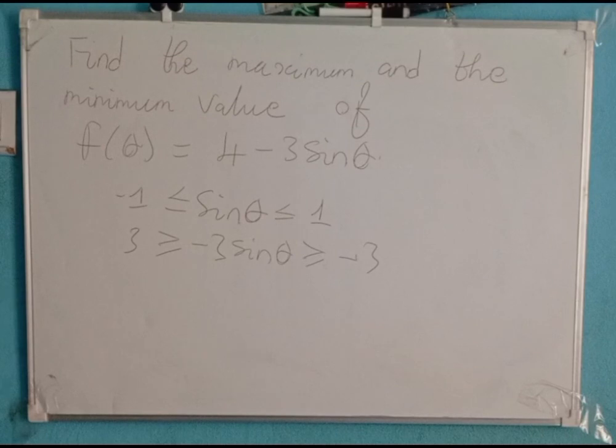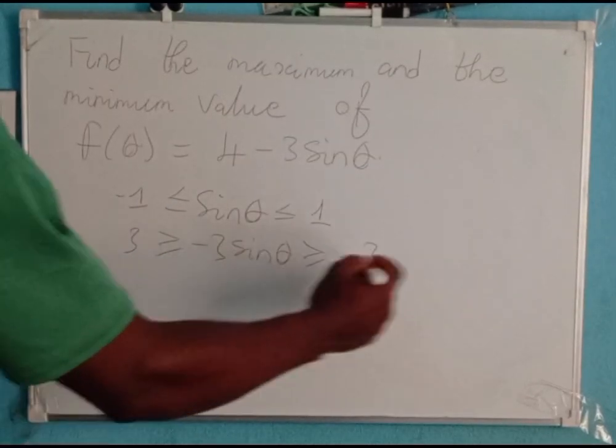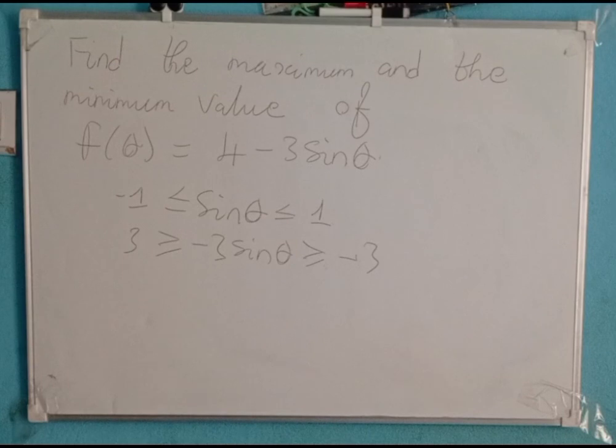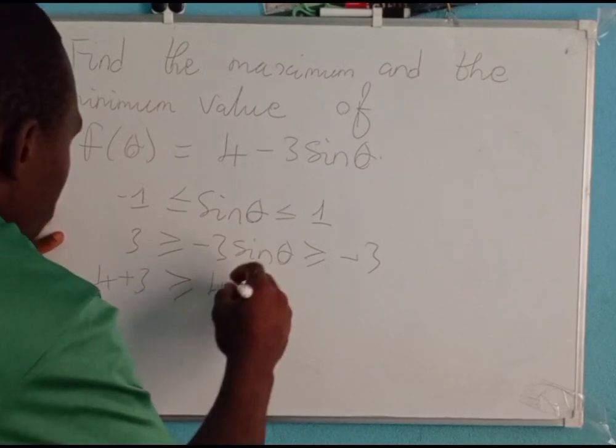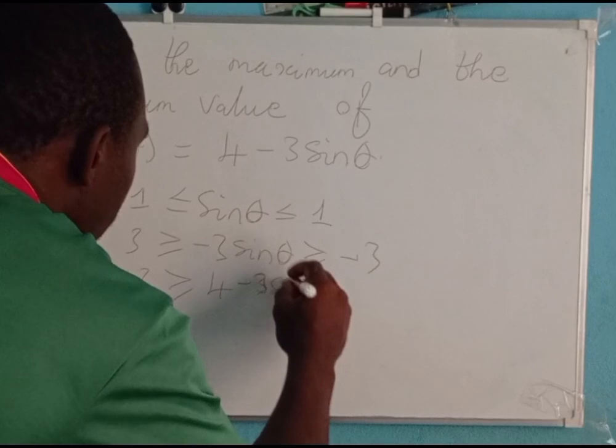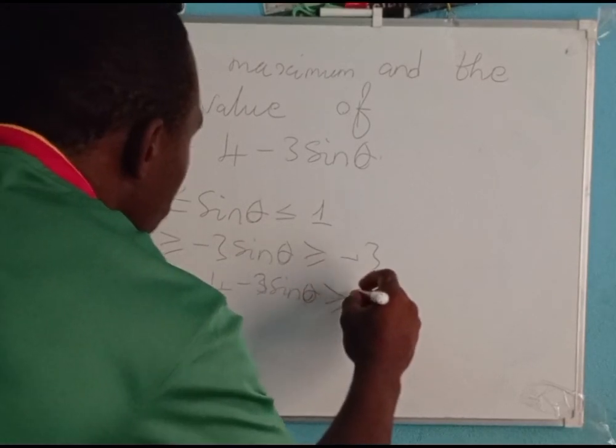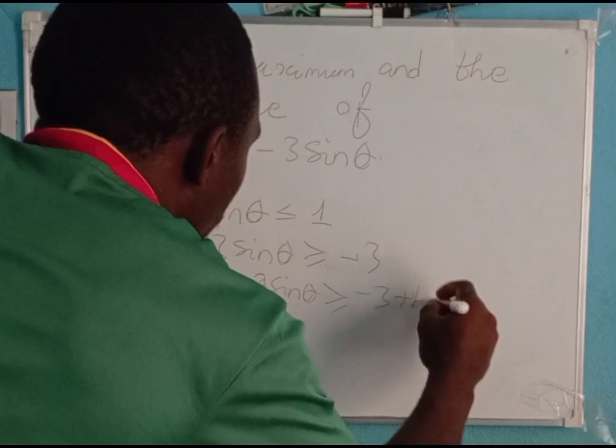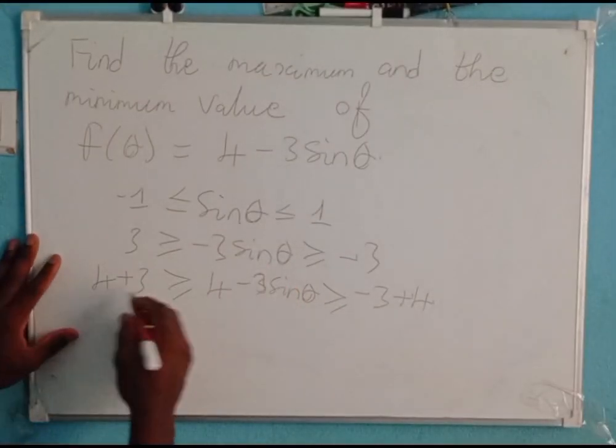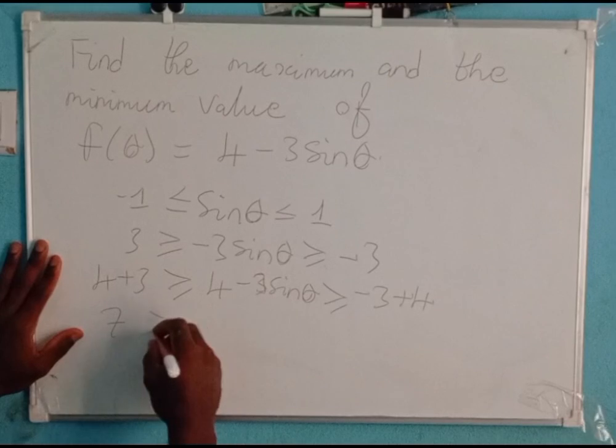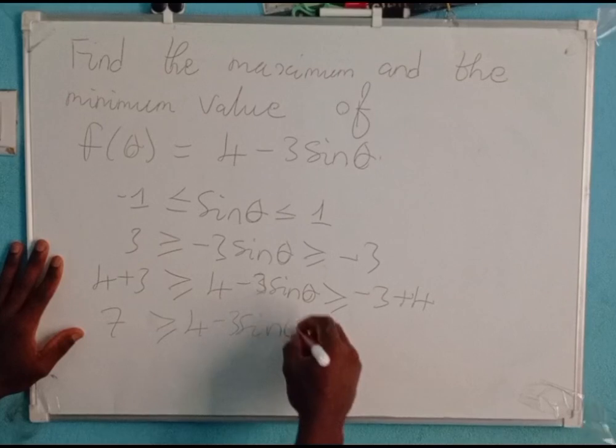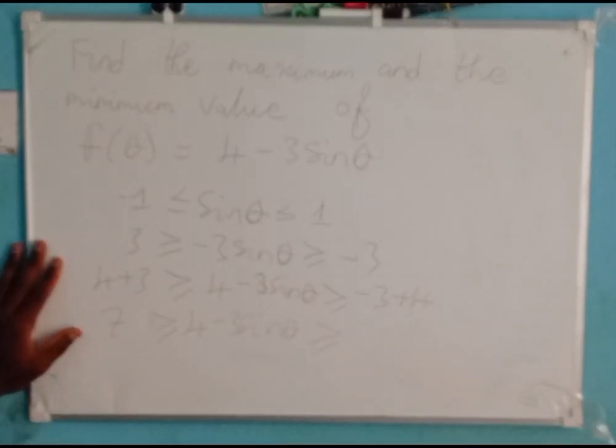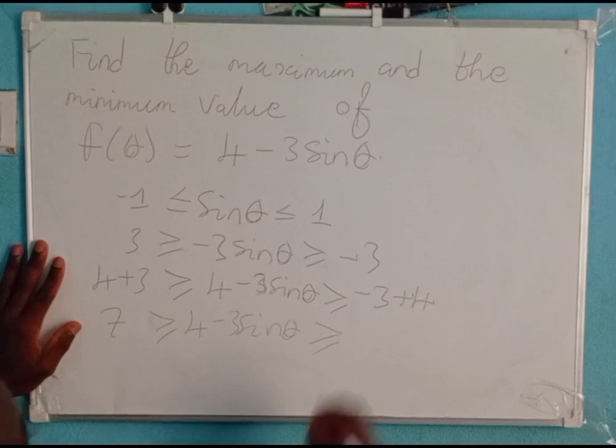Next step, we are going to add 4 all through this double inequality. Adding a positive number leaves the inequality signs unchanged. 4 plus 3 is greater than or equal to 4 minus 3 sine theta, which is greater than or equal to negative 3 plus 4. This will give us 7 is greater than or equal to 4 minus 3 sine theta, which is greater than or equal to 1.